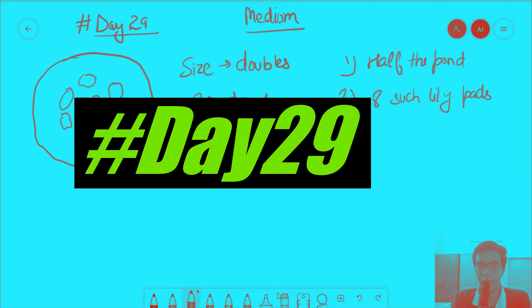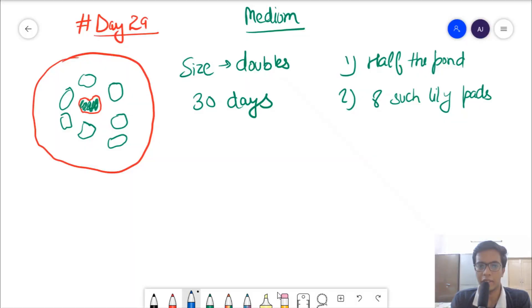Good morning you all. So day 29 question dekhte hain. Question day 29 was easy, not too difficult. If you had thought about it properly, you could have solved it.